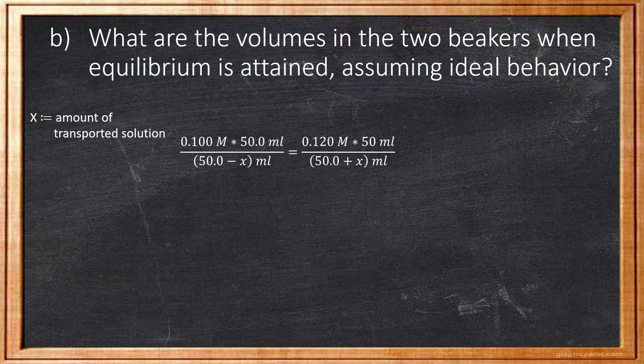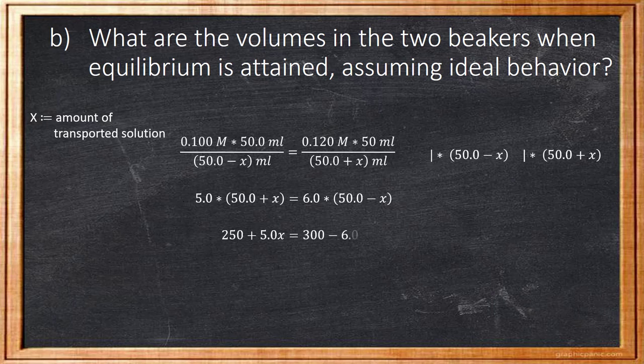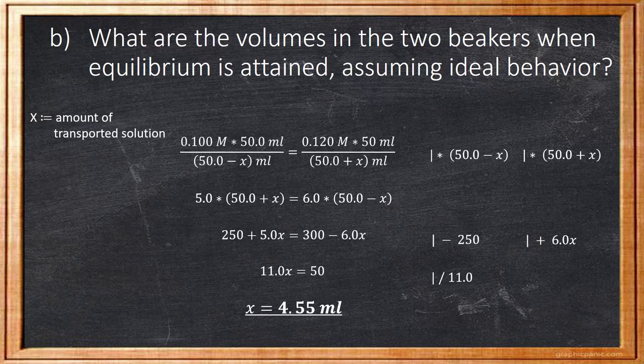If we now multiply with the denominators, we will get 5 multiplied by 50 plus x equals 6 times 50 minus x. Summarized, we have 250 plus 5x equals 300 minus 6x. Next, we subtract 250 and add 6x. Now we have 11x equals 50. Divided by 11, we will get x equals 4.55 ml as our result.